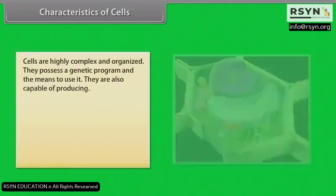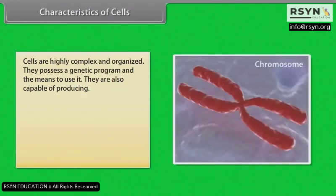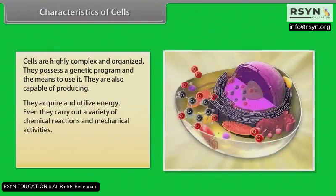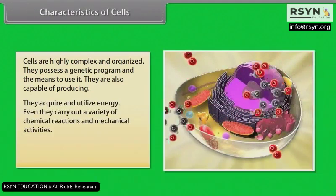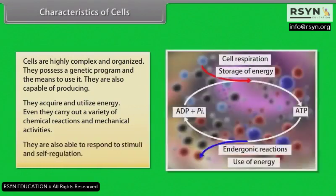Cells are highly complex and organized. They possess a genetic program and the means to use it. They are also capable of reproducing. They acquire and utilize energy, carry out a variety of chemical reactions and mechanical activities, and are able to respond to stimuli and self-regulation.